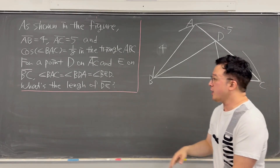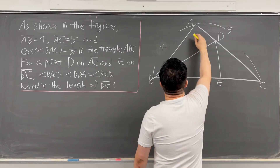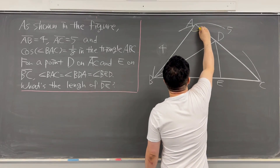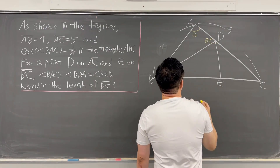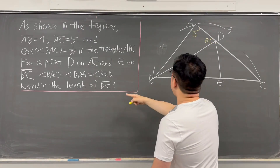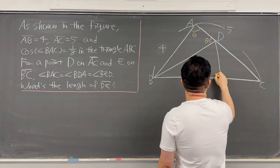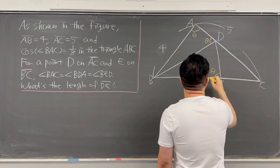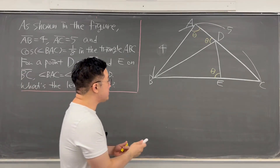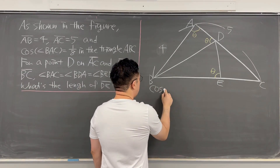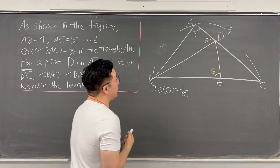The question already gave us that those three angles are the same, so let me call those angles theta. This angle is theta, this angle is the same as theta, and this angle BED is also the same as theta. Based on this, we already know cosine of theta — the question already gave us this is equal to 1/8.